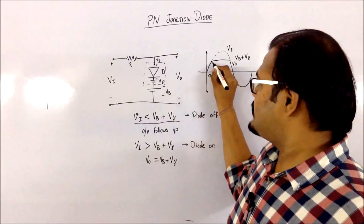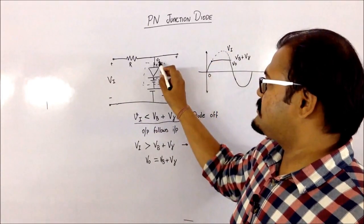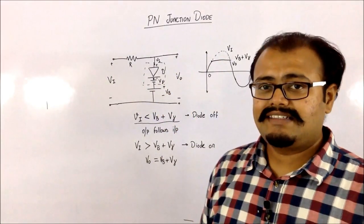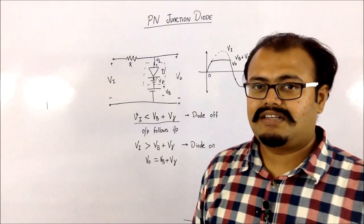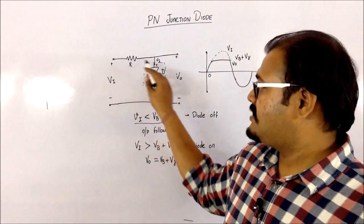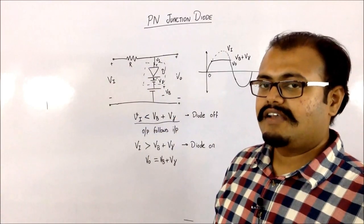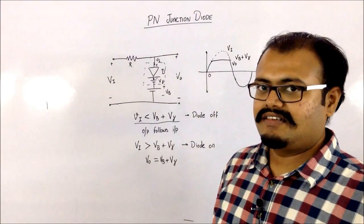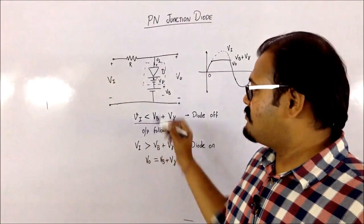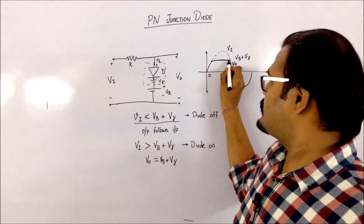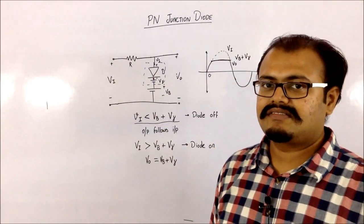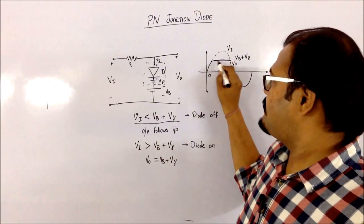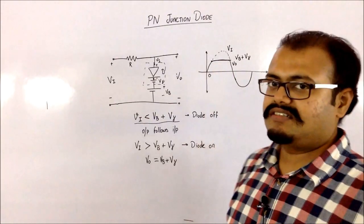Once VI goes beyond VB plus V gamma, the diode is going to turn on, meaning there will be a flow of current. Because of that, the output voltage will now be defined by this circuit, and that voltage is nothing but VB plus V gamma. So if VI goes beyond that value, I will be getting a clipped-off version of my input at the output.